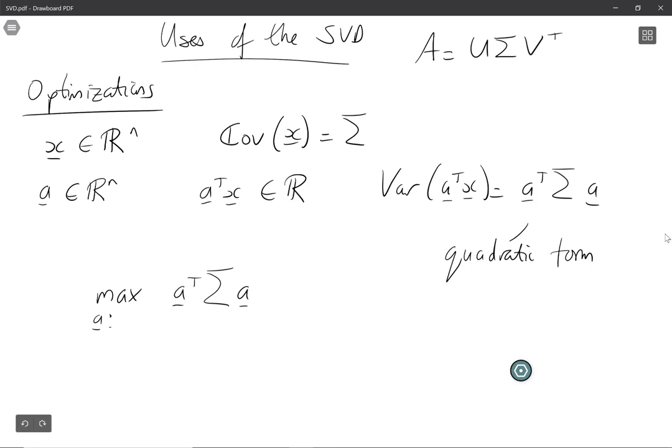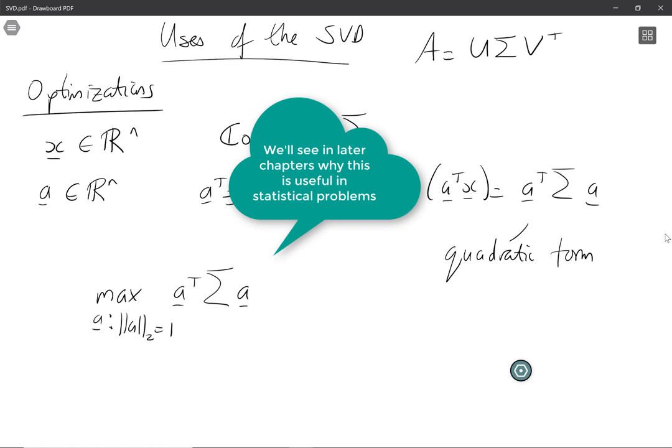So let's say we're going to constrain a so that the length of a is 1. So we're going to find the vector of length 1 that maximizes this quadratic form.